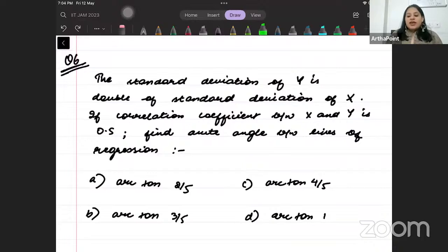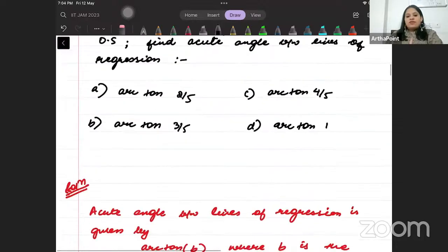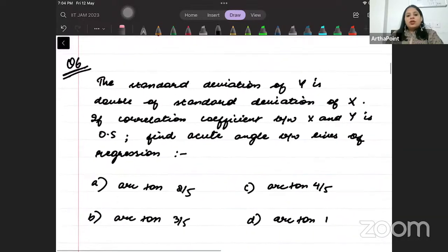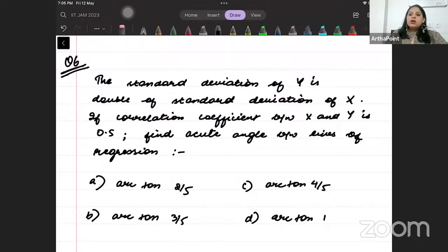The standard deviation of Y is double the standard deviation of X. If correlation coefficient between X and Y is 0.5, find acute angle between lines of regression. So from question 6 onwards beta till question 100, I am going to post it on the portal. You can go ahead and look at your portal and you can solve those questions along with me. I have written the complete explanation also. So you can visit the portal and you can try and solve it on the portal for the students who have enrolled with us for this.